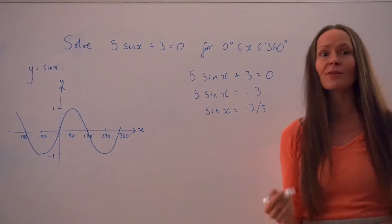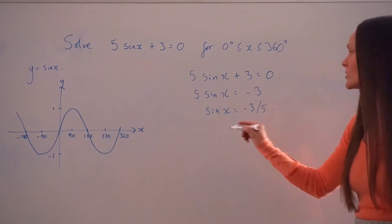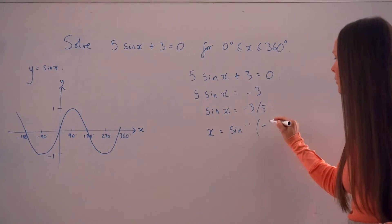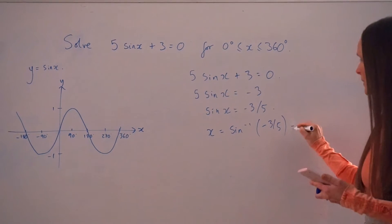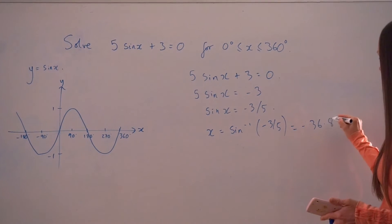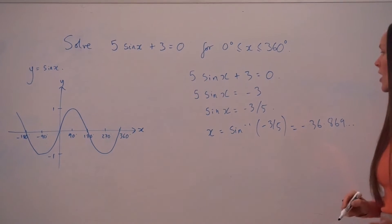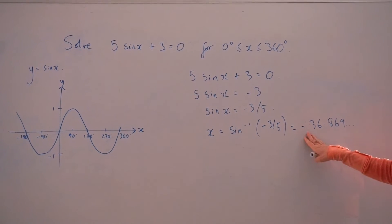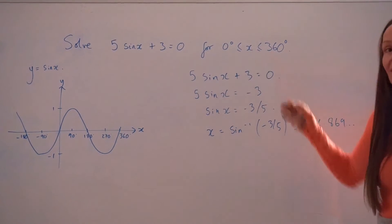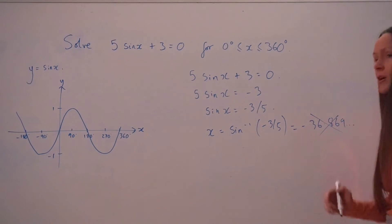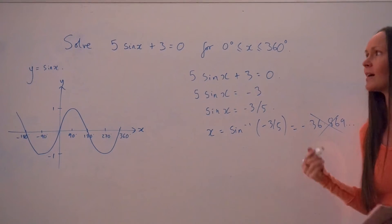Just as before, to work out the first value of x, you type into your calculator sin minus 1 of negative 3 fifths, which gives negative 36.869 and so on. You can see already this value of x is negative, so it doesn't fall within our range of values. So this isn't actually a solution in this question, but it's still going to help us work out the other solutions.